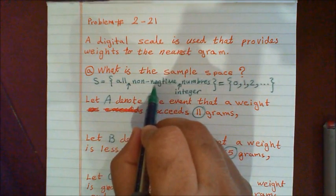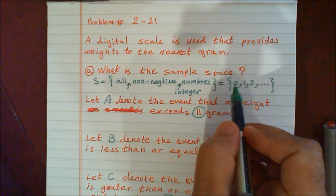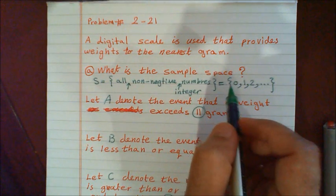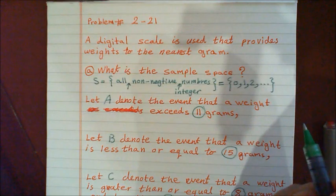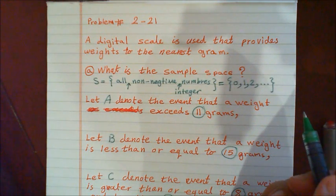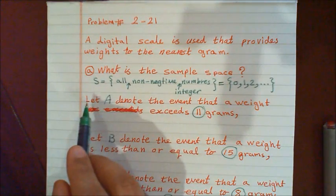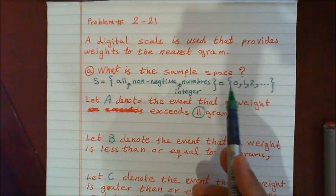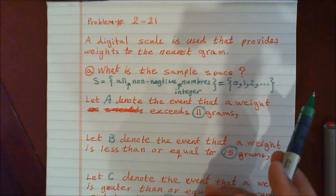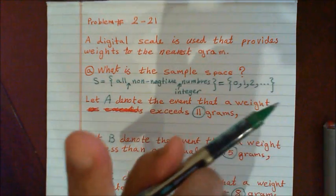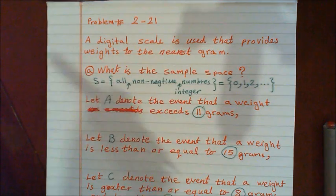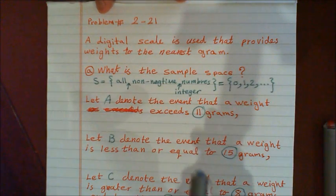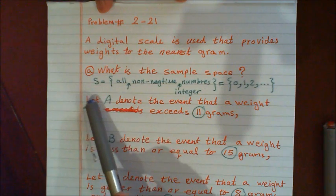We say non-negative because zero is included there. If it were without zero, then you would say all positive integer numbers. We said non-negative because we have to include zero. So this is the sample space — from zero to infinity, all non-negative integer numbers.